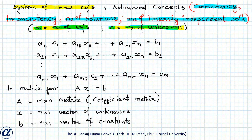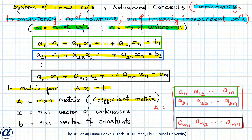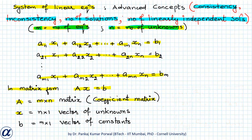Our system of linear equations is given as a11x1 plus a12x2 plus ... plus a1nxn equals b1, and similarly we have m equations. In matrix form that is written as Ax equals b, where A is the coefficient matrix of size m by n, x is the vector of unknowns of size n by 1, and b is the vector of constants of size m by 1.